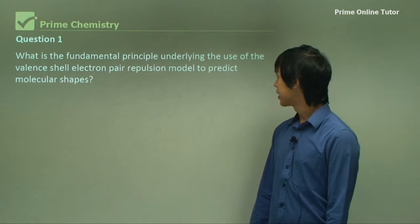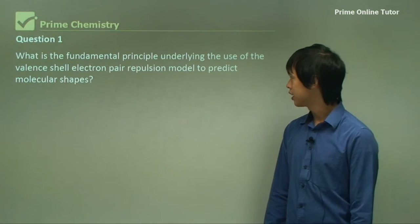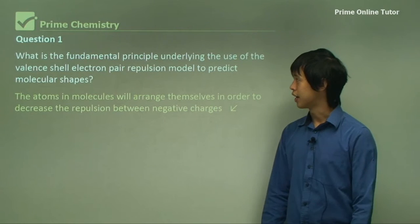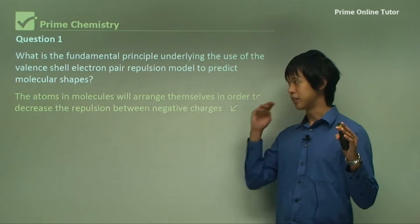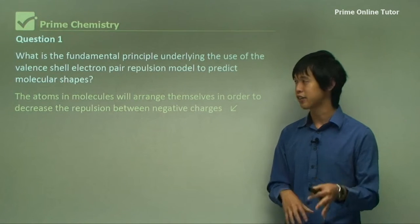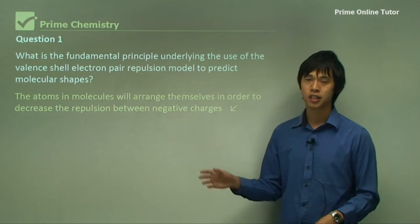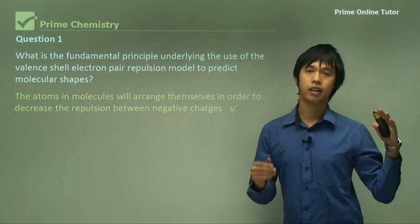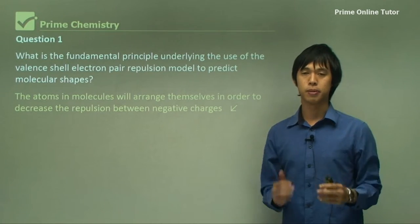So what is the fundamental principle underlying the use of VSEPR to predict molecular shapes? The underlying fundamental physical principle is that the atoms in a molecule will arrange themselves in order to decrease the repulsion between negative charges. So the electrons will always distribute themselves in such a way that the repulsion is completely minimized.